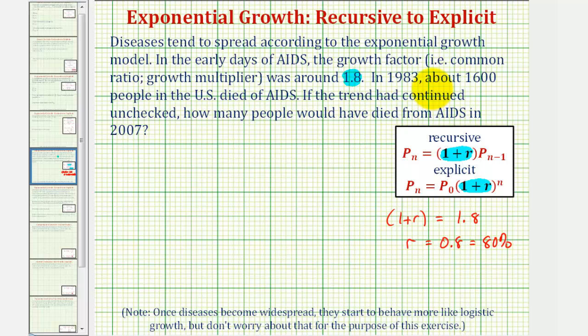In 1983, about 1,600 people in the U.S. died of AIDS. If the trend had continued unchecked, how many people would have died from AIDS in 2007?